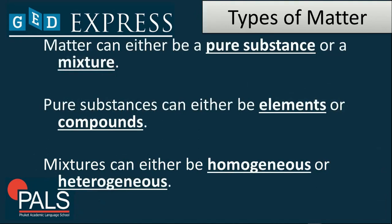A matter can either be a pure substance or a mixture. Pure substances can either be an element or a compound. Elements are those that can be found on the periodic table and can contain only one kind of atom. A compound is a combination of two or more elements. A mixture can either be homogeneous or heterogeneous. In a homogeneous mixture, the substances are physically mixed together evenly, while in a heterogeneous mixture, the different parts that were mixed can be easily identified.